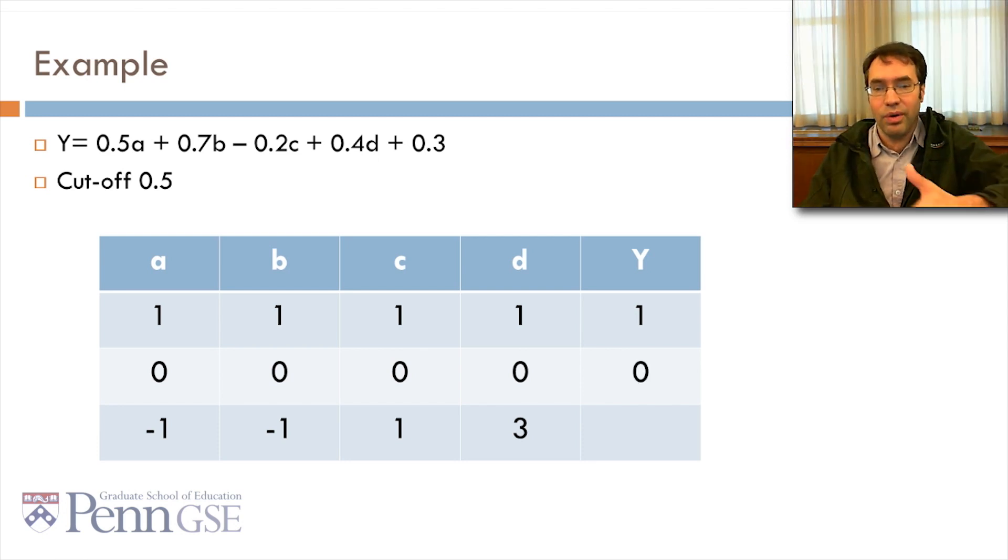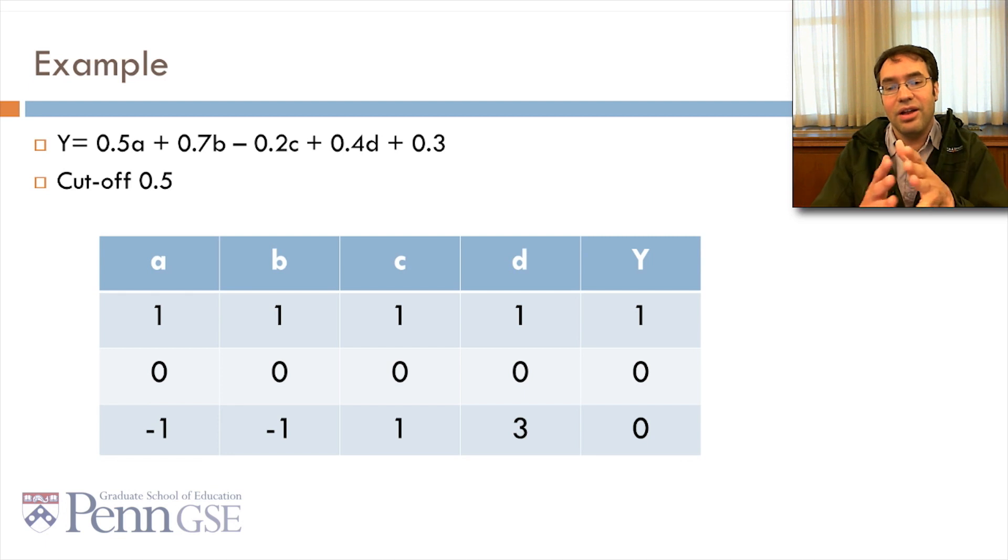What if they're all 0? Well, 0, 0, 0, 0, 0, plus 0.3 is less than 0.5, so we get 0. And, negative 1, negative 1, 1, 3, pause the video for a second, try it out, you'll see that the answer is below 0.5, so it's 0.